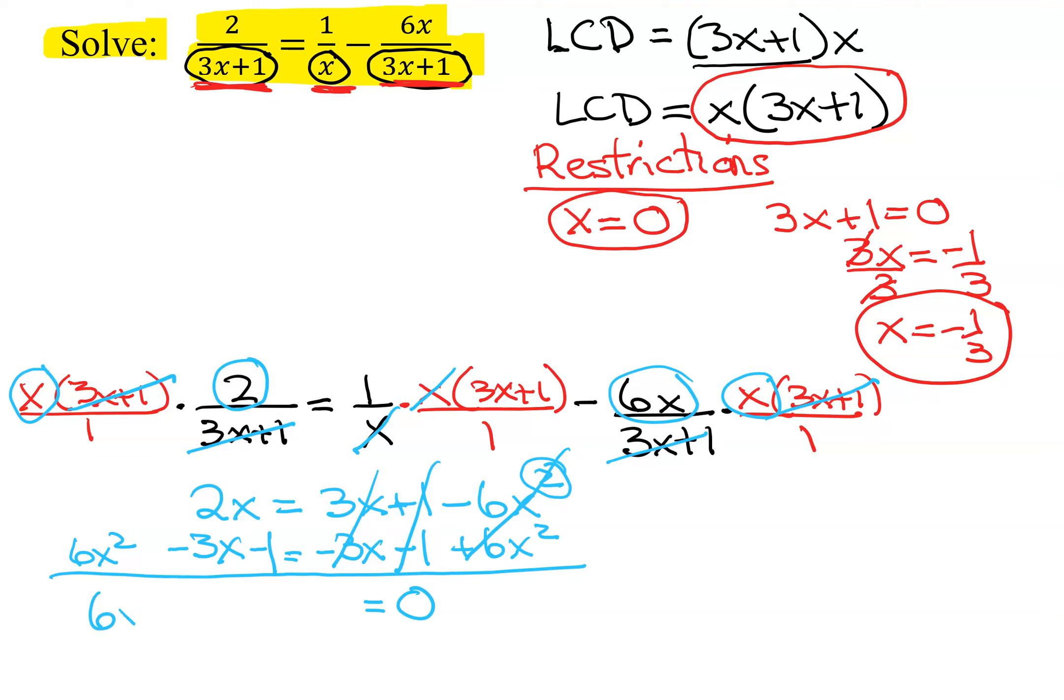And on the left-hand side, I have 6x squared. Then I have negative 3x plus 2x, which is negative x minus 1. So now I have my quadratic equation in standard form. That means I have 0 on one side, everything on the other is written in descending order. So this is ready to factor.